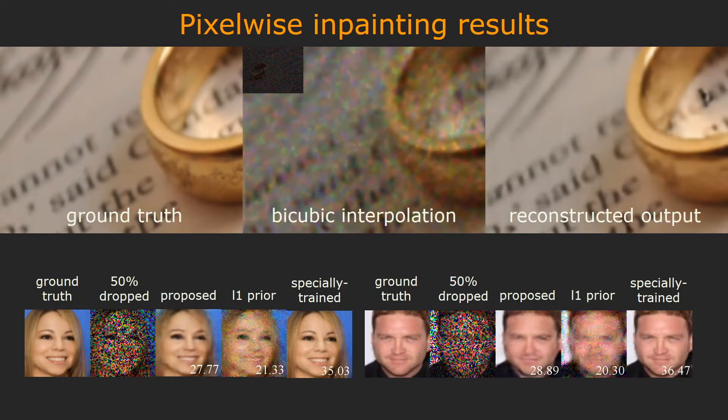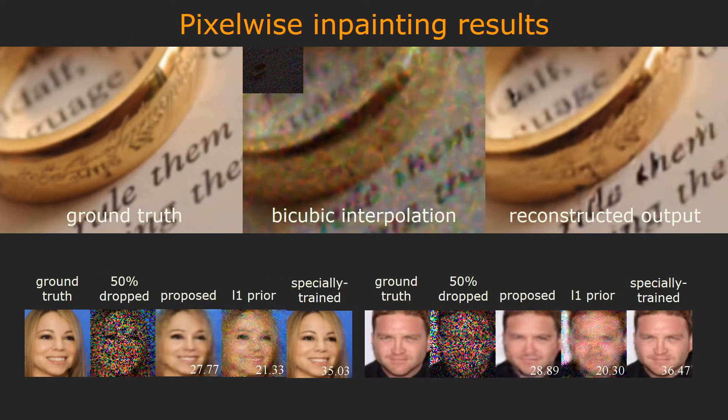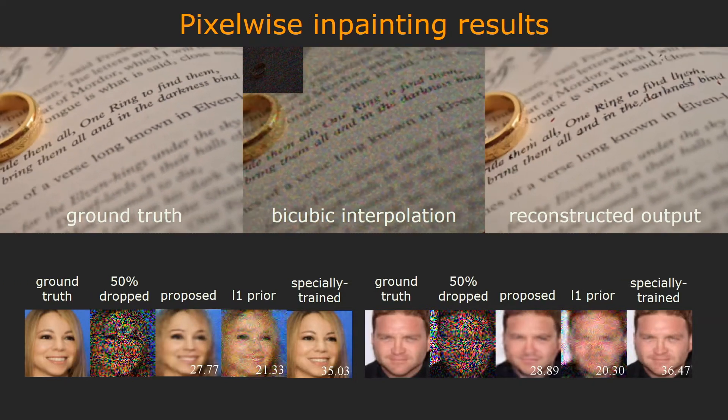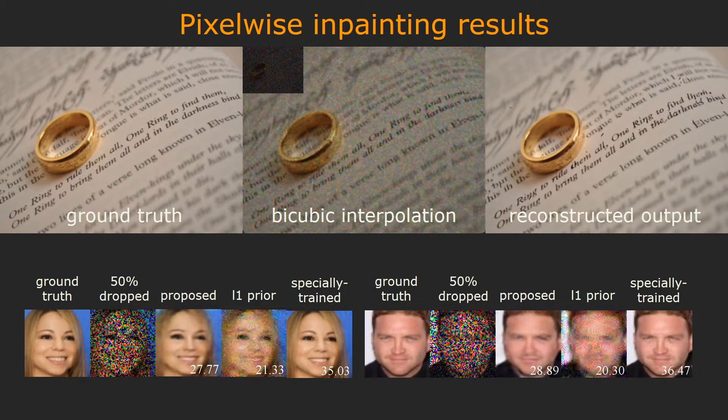Now for comparison, we show the bicubic interpolated result in the middle. As can be seen, the recovered image of the proposed method has less artifacts. On the bottom are the results on the Microsoft Celebrity dataset. We can see that the proposed method outperforms the typical wavelet sparsity prior and achieves comparable performance as the specially trained pixel-wise inpainting network.